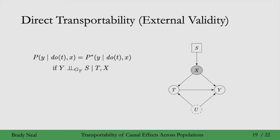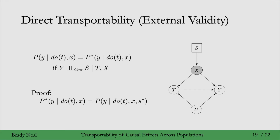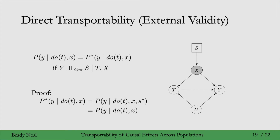The proof for this equality, given the d-separation statement, is fairly simple. We rewrite the p* term by conditioning on s*. Then, since y is d-separated from s conditional on t and x in the manipulated graph, we can drop s — this is rule one of do-calculus. The graphical intuition is that there's no association flowing from s to y when we condition on x in the graph with no edges into t, so s is irrelevant and can be dropped.